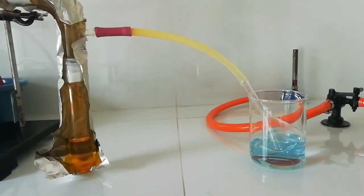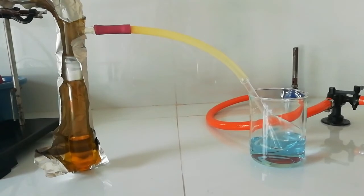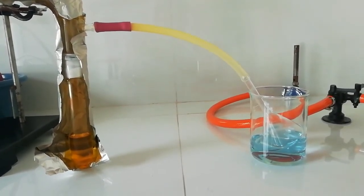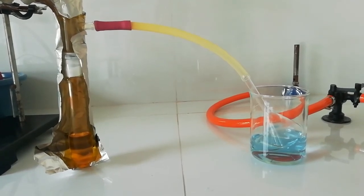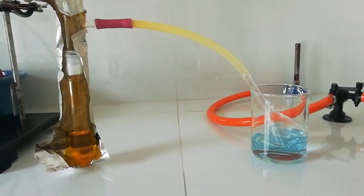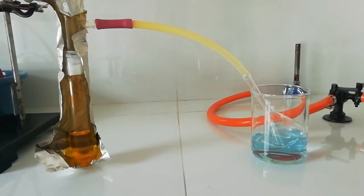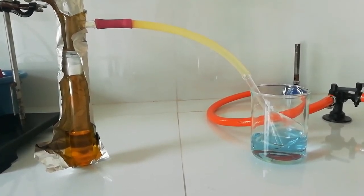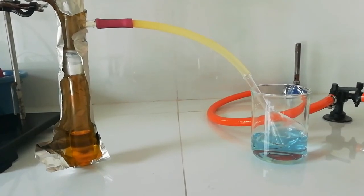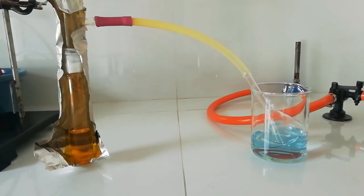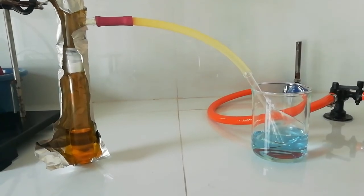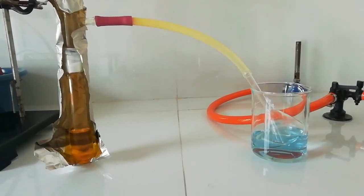This is the red fuming nitric acid. You can see there is a beaker with blue color liquid - that is for the escaping nitrogen dioxide gas and red fuming nitric acid fumes. That solution is 10% solution of sodium hydroxide that is blue color due to the universal indicator solution I added to check the pH.